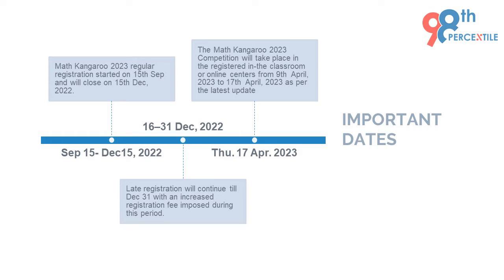Let us now discuss the important dates related to Math Kangaroo 2023. Regular registration started on 15th September till 15th December, though late registration will continue till December 31st with an increased registration fee. The Math Kangaroo 2023 competition will take place in registered classrooms or online centers from 9th April to 17th April 2023, as per the latest update.